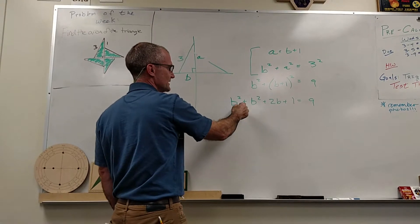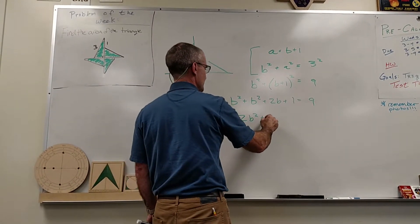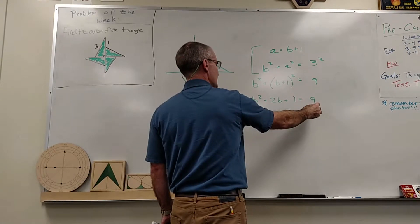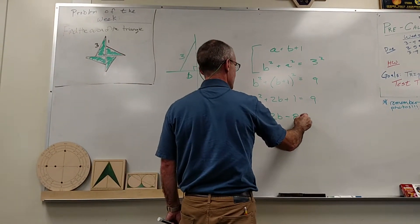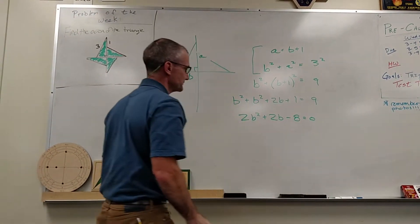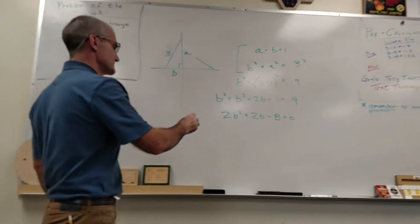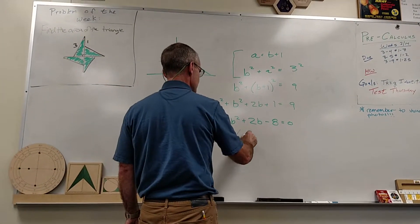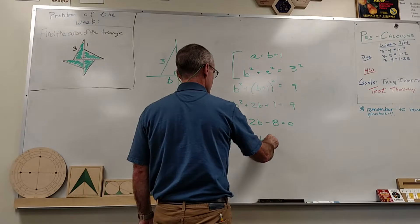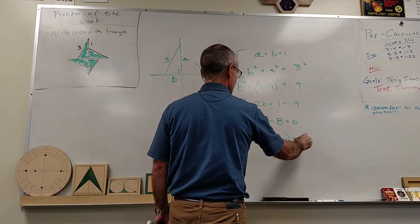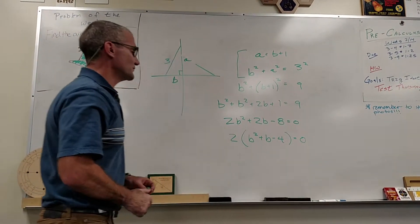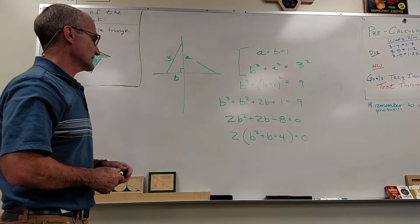It gives me a quadratic. Now I have 2B squared plus 2B, subtract nine from both sides, minus eight equals zero. I can factor out a two and divide both sides by two. You get B squared plus B minus four equals zero. There are no factors of four that are going to work out to be integers.